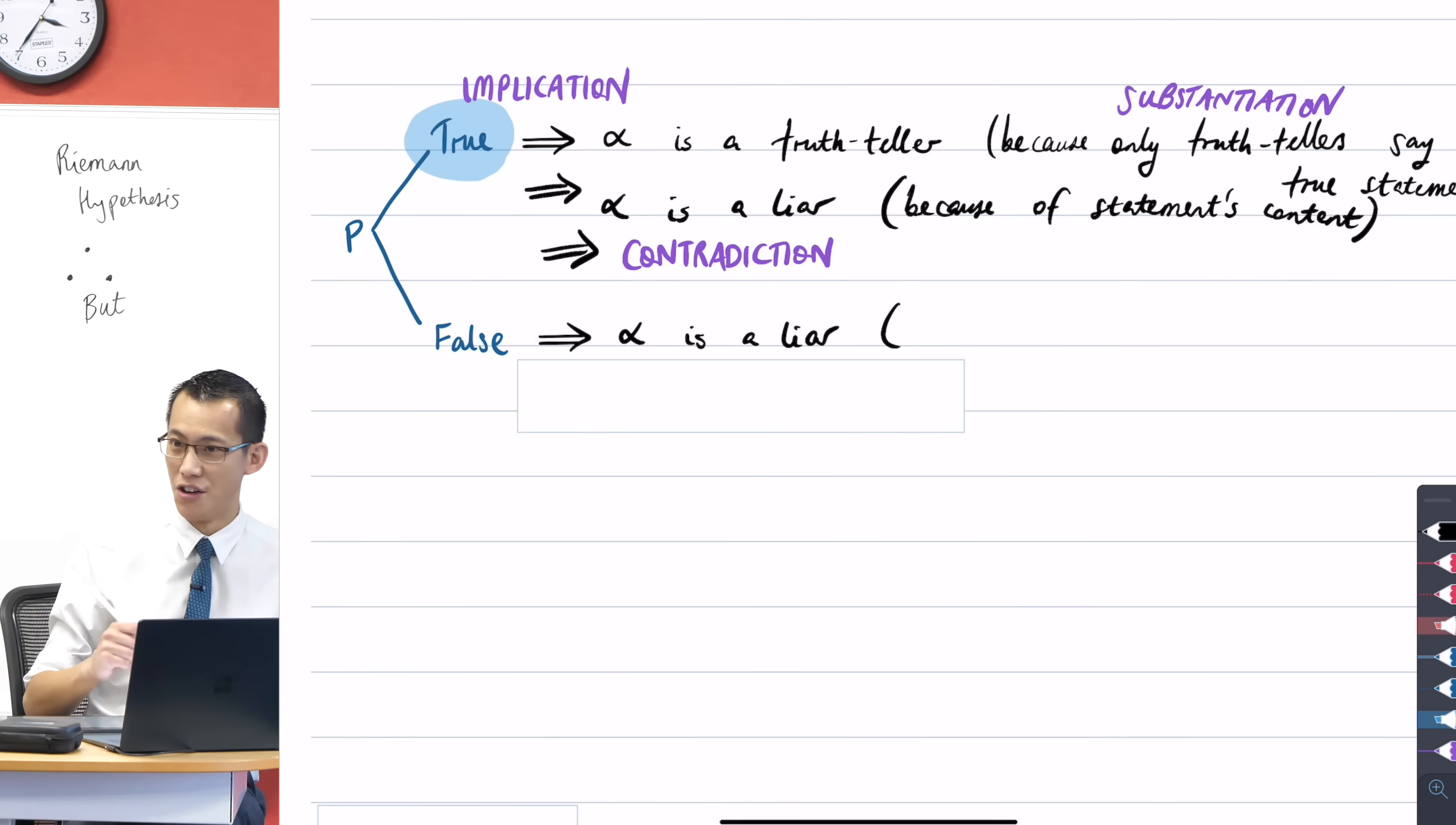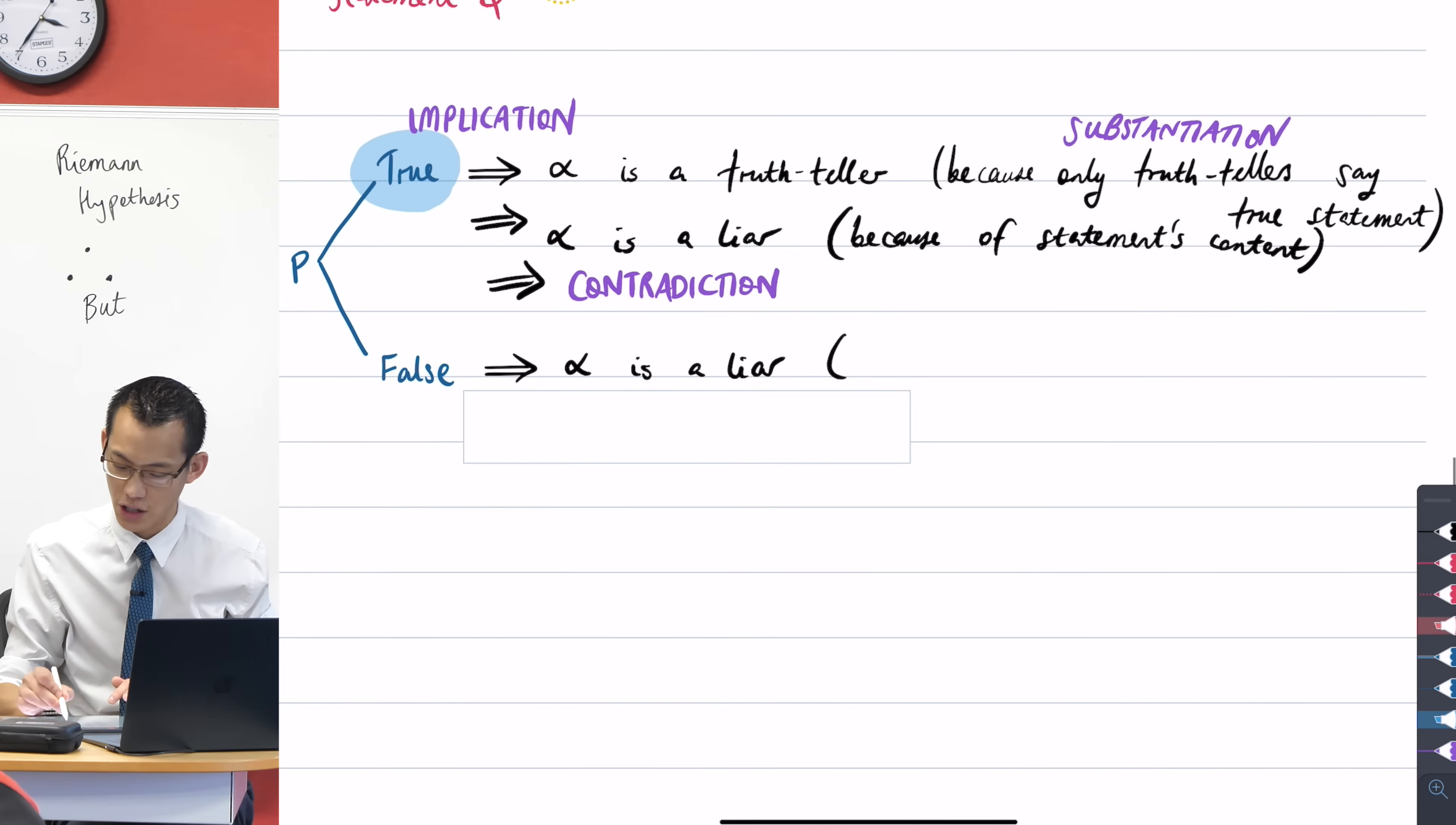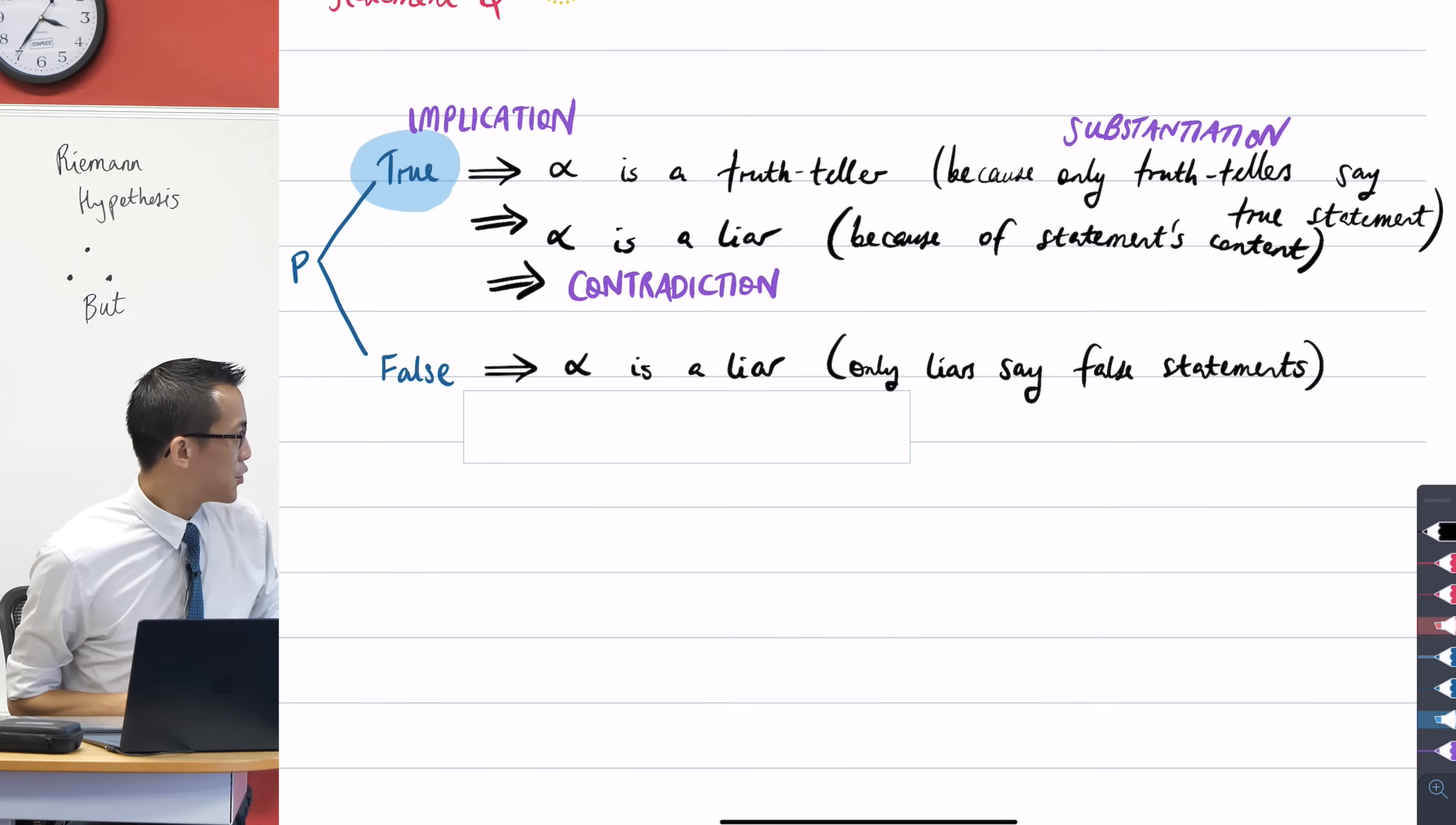And not only can we say it's true because we've gotten it from up above, but it's because parallel to this logic over here, you know how I said before alpha is a truth-teller because only truth-tellers say true statements, I can say alpha is a liar down here because only liars say false statements. So that's actually my substantiation, only liars say false statements.